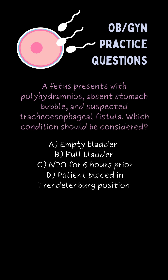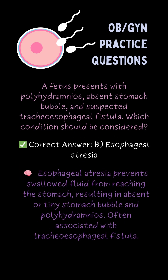A fetus presents with polyhydramnios, absent stomach bubble, and suspected tracheoesophageal fistula. Which condition should be considered? B. Esophageal atresia.